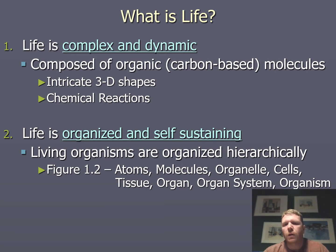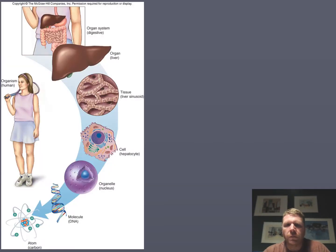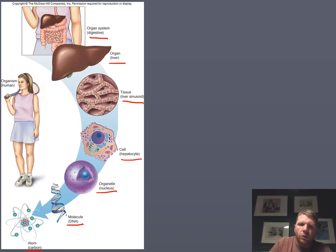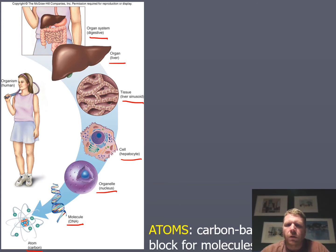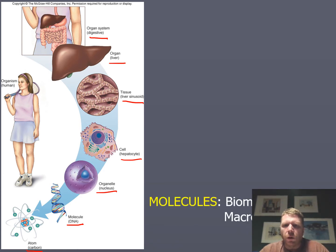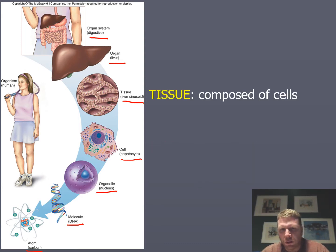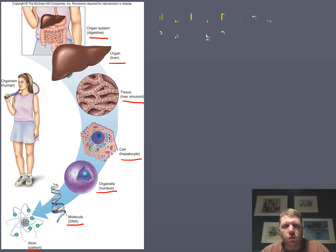We can look at this hierarchy as: atoms, molecules, organelles, cells, tissue, organ, organ system, and ultimately an organism. At its lowest level we have atoms, then molecules, organelles, cells, specialized cells organized into tissue, then tissue organized into an organ like the liver, which is part of an organ system. Atoms are the carbon-based building blocks for molecules; molecules are biomolecules and macromolecules, which we'll focus on in this class; organelles have specialized functions within a cell.